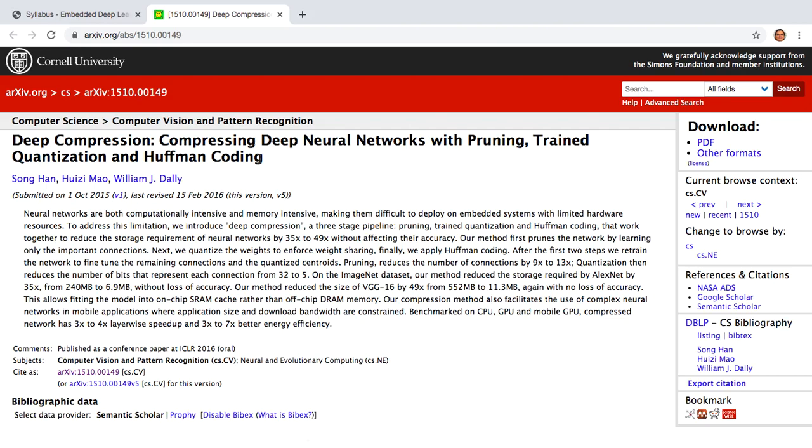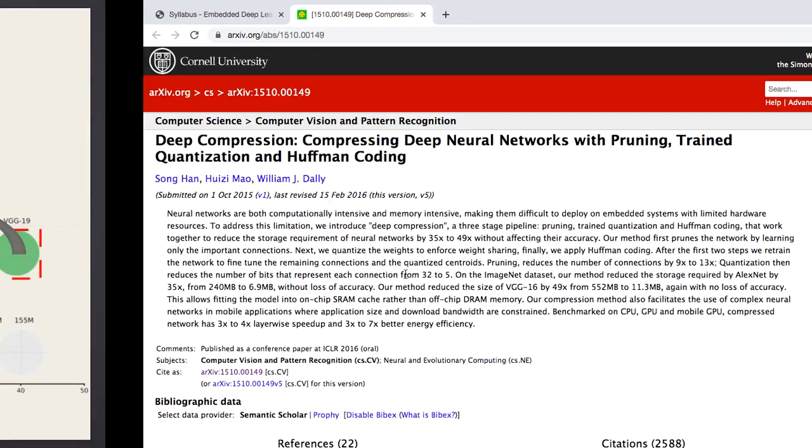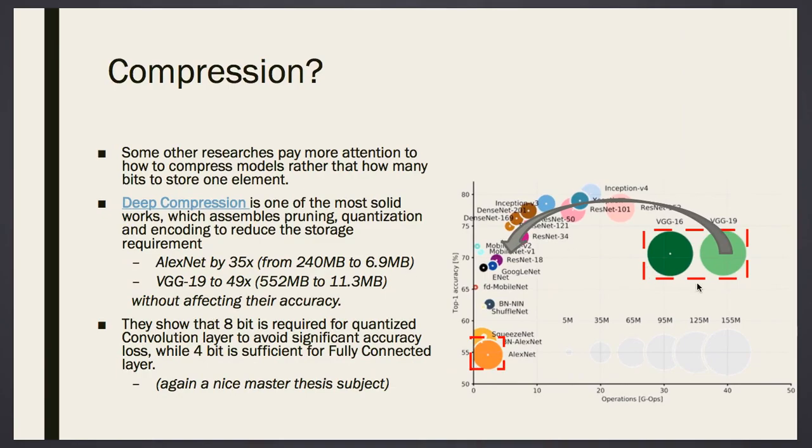They compressed VGG and also AlexNet to much smaller weights, so that their memory consumption becomes much lower. So that's an idea. We are not going to cover this intensely in our lectures, but this is also an important title.